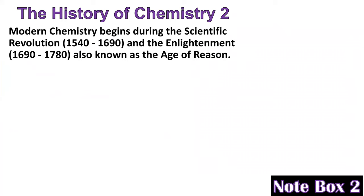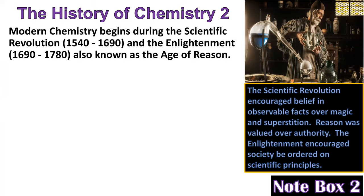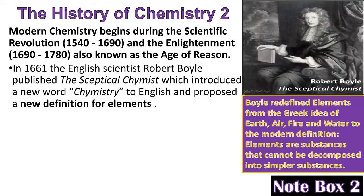History of chemistry part two, same note box. Modern chemistry begins with the scientific revolution, which happened between 1540 and 1690, and the Enlightenment, between 1690 and 1780. The scientific revolution encouraged belief in observable facts over magic and superstition; reason was valued over authority. The Enlightenment encouraged society to be ordered on scientific principles. In 1661, the English scientist Robert Boyle published The Skeptical Chemist, which introduced the word chemistry to English and proposed a new definition for elements.